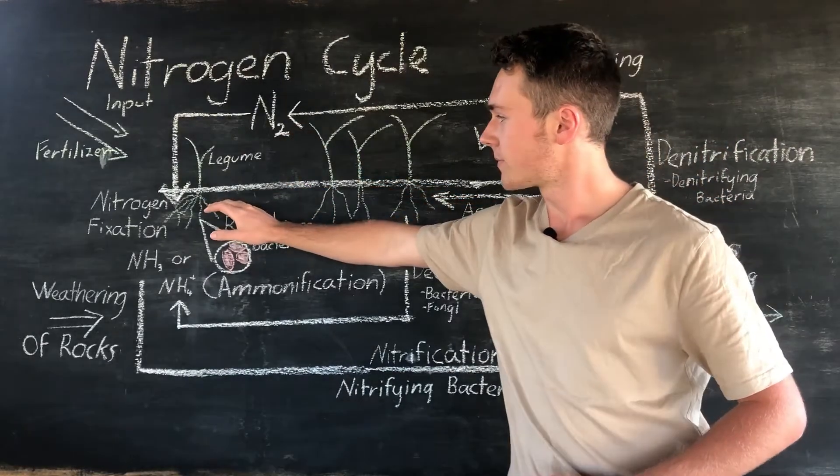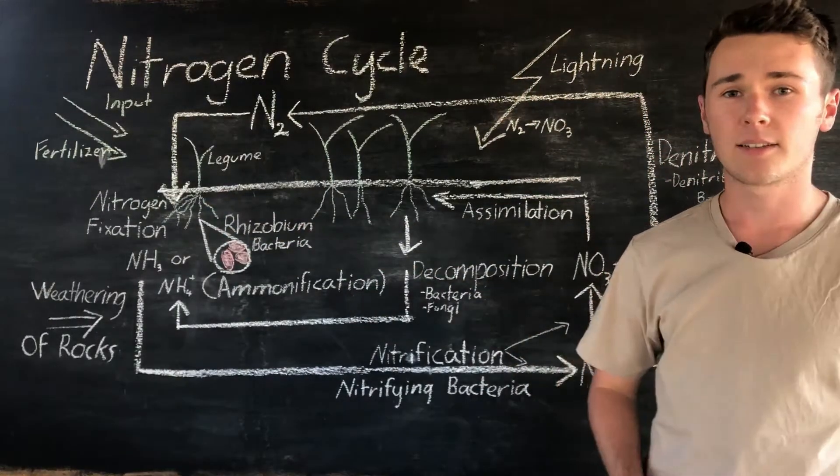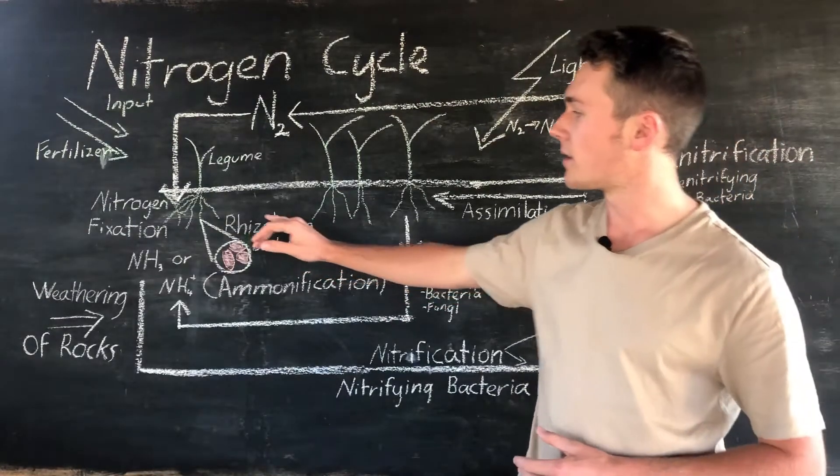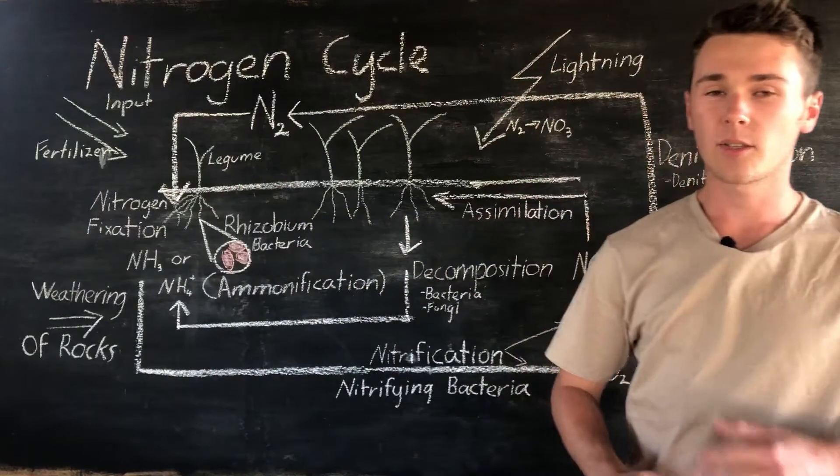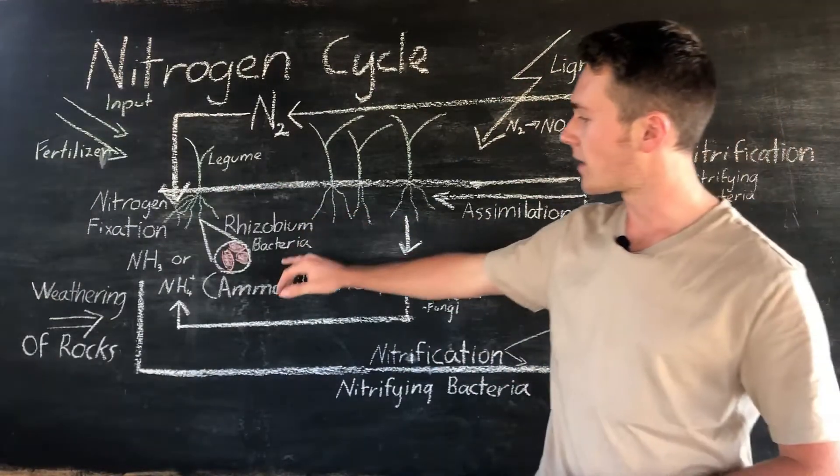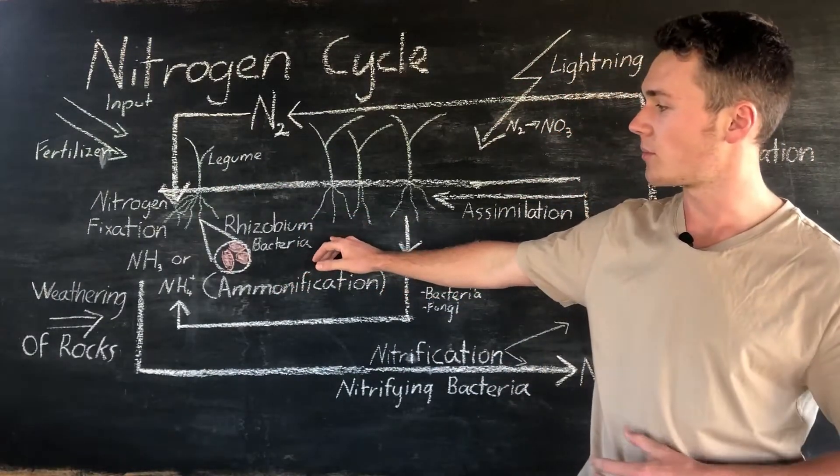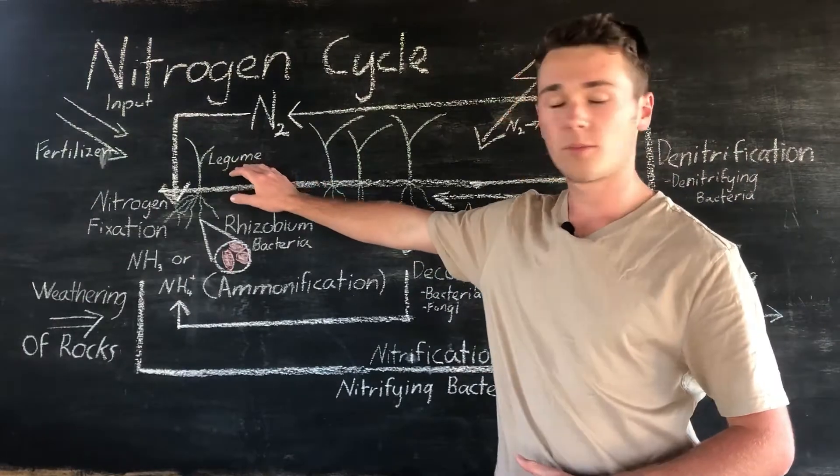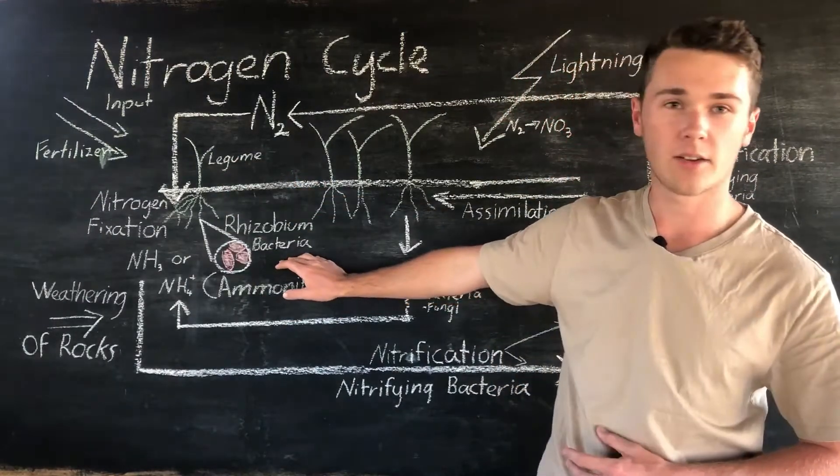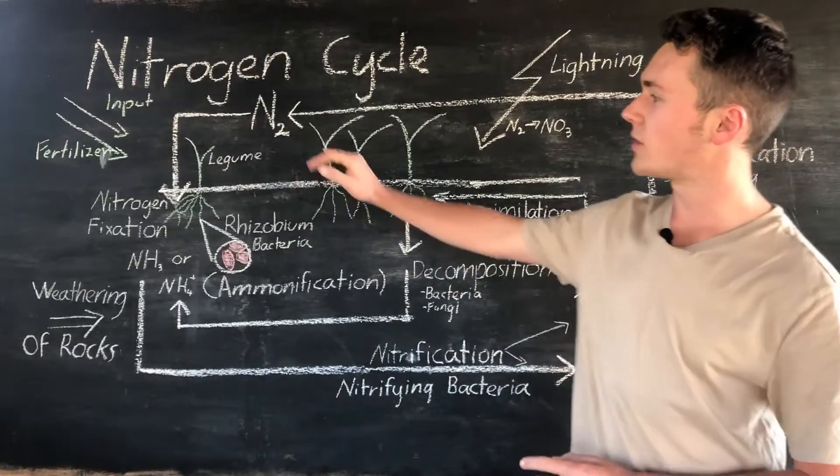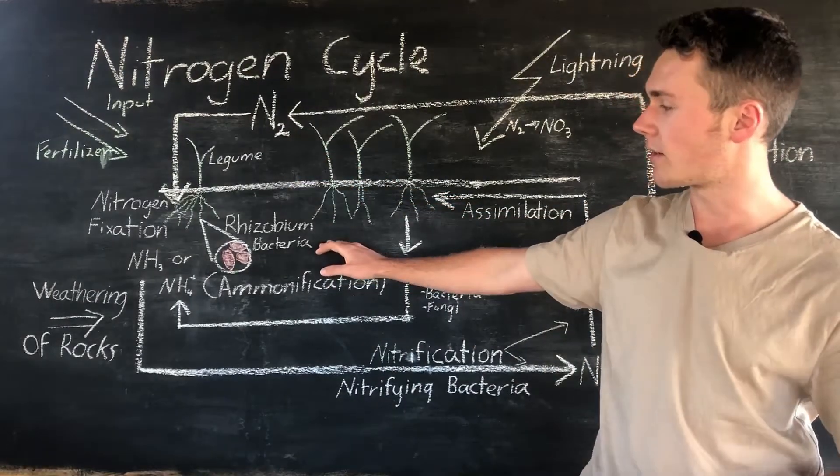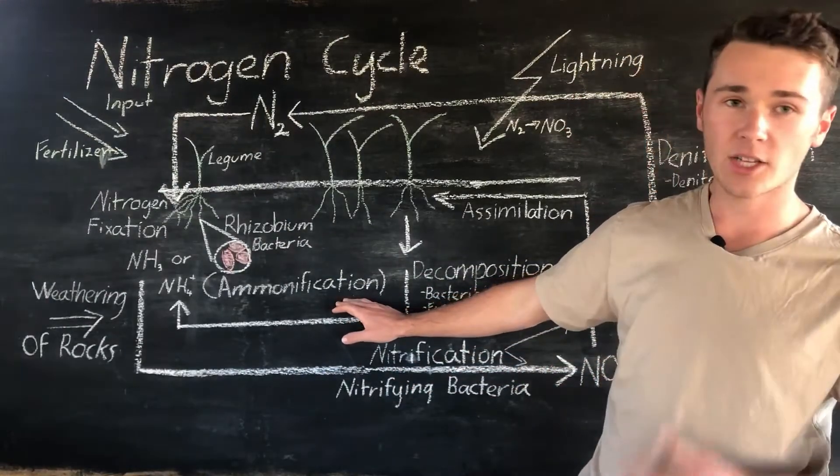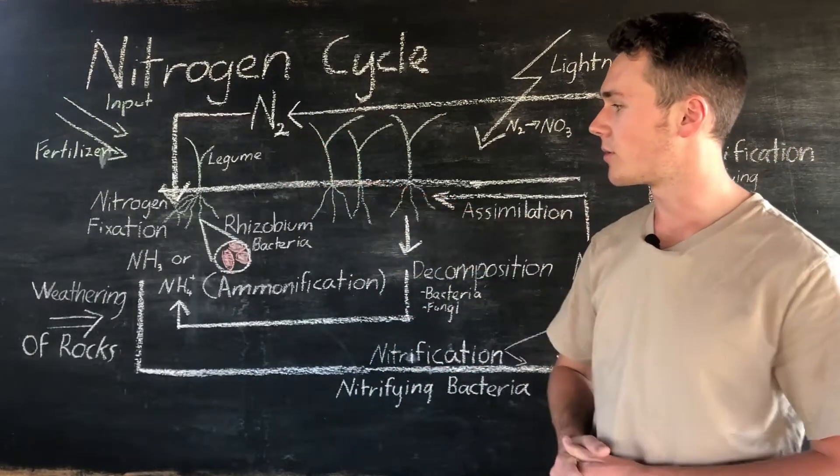So it enters our soil and inside our soil we have a lot of bacteria. Some of these bacteria are called rhizobium bacteria and these can be found in nodules within our legumes. Legumes are a group of plants and they have a symbiotic relationship with this rhizobium bacteria. This relationship allows the legume to receive nitrogen and also gives the bacteria a place to live. The nitrogen gas is converted by the rhizobium bacteria into ammonia or ammonium. This is termed ammonification as we convert our nitrogen gas into ammonium.